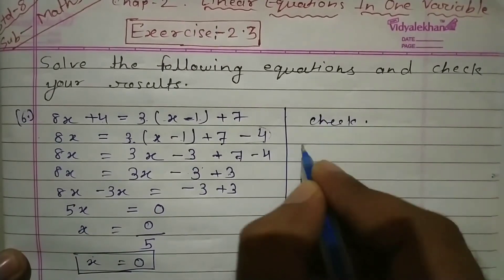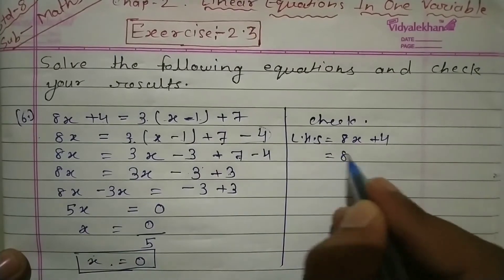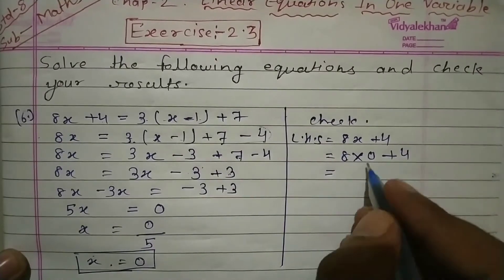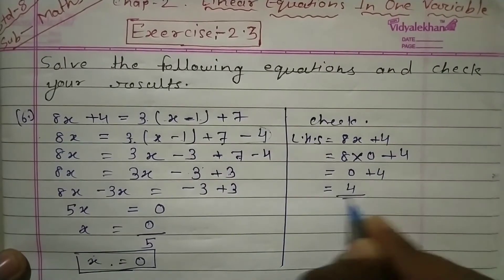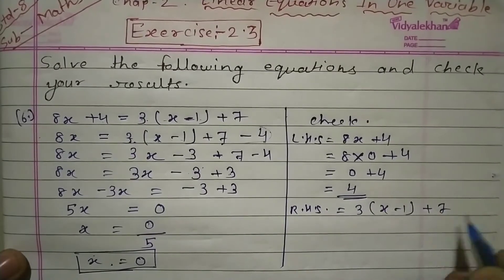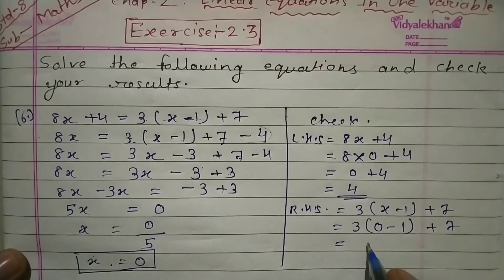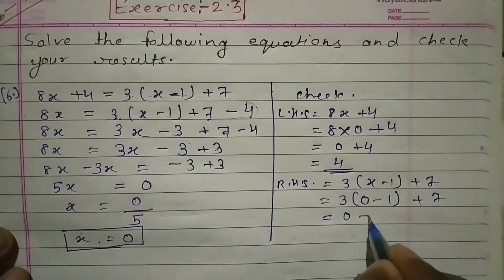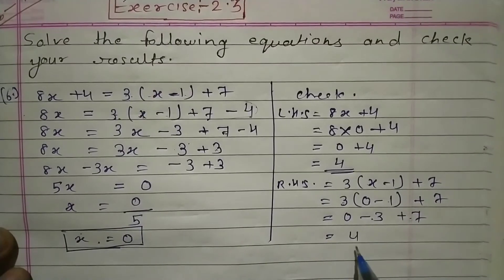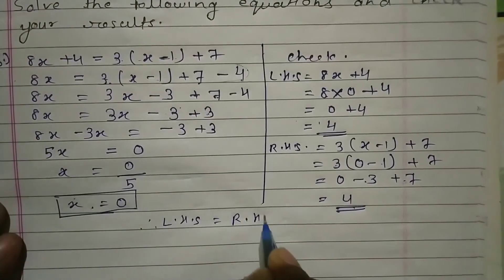Answer check करते हैं। LHS लेते हैं: 8x + 4। तो 8 × 0 + 4 = 0 + 4 = 4। यह आपका LHS आ गया। RHS: 3(x - 1) + 7 = 3(0 - 1) + 7 = 3×0 - 3 + 7 = 0 - 3 + 7 = 4। LHS और RHS की value same आई, therefore LHS = RHS। So this answer is right।